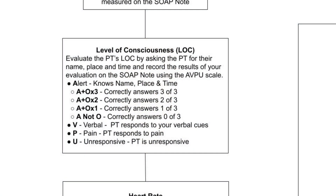P — Pain Response: This level is used for patients who do not respond to verbal cues but react to painful stimuli. The stimuli could be a pinch, a gentle rub on the sternum, or pressure on a fingernail bed. A response to pain indicates a lower level of consciousness where the patient's brain only reacts to signals of physical discomfort. The response could be as minimal as a groan, withdrawal from the stimulus, or a grimace.